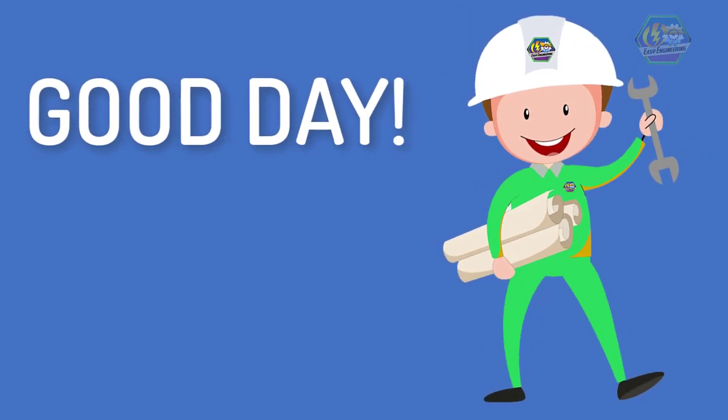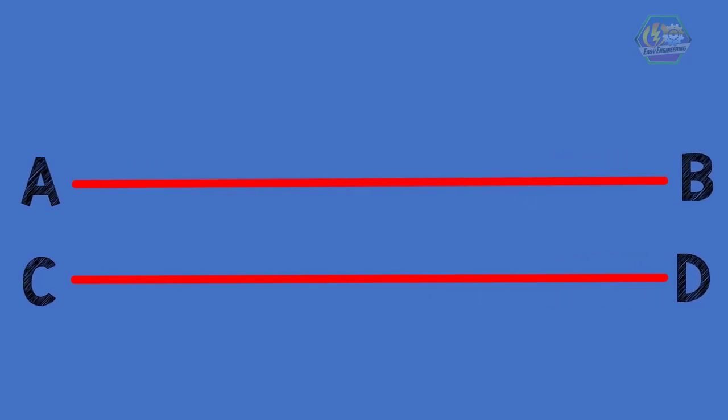Good day learners, this is Easy Engineering. For today's topic we're going to talk about angles. Before we go to this topic, let's take a look at this picture first. This picture has two lines, namely line AB and line CD. These two lines will never cross, even when extended forever, and these lines are called parallel lines.